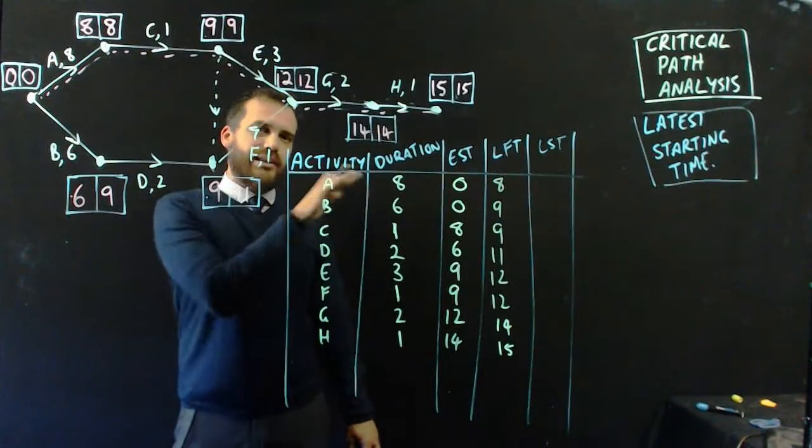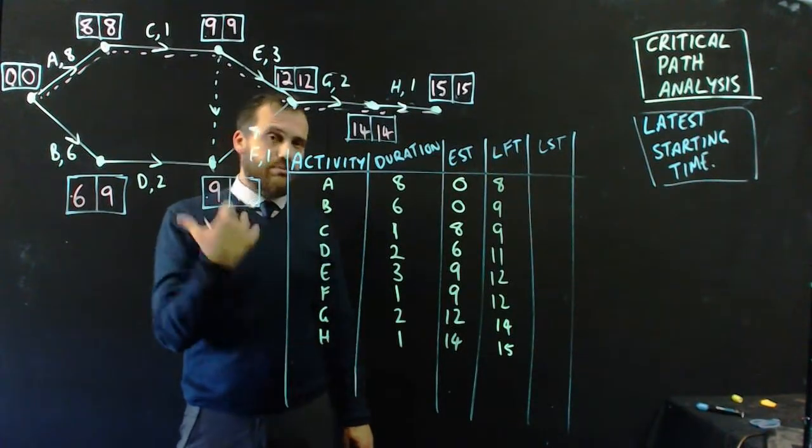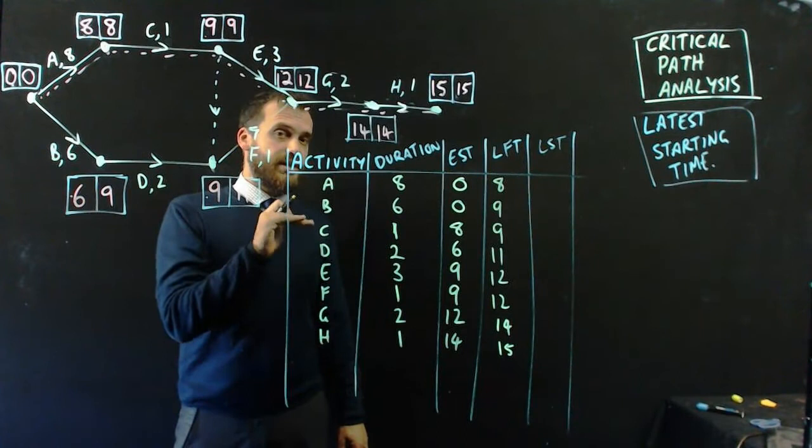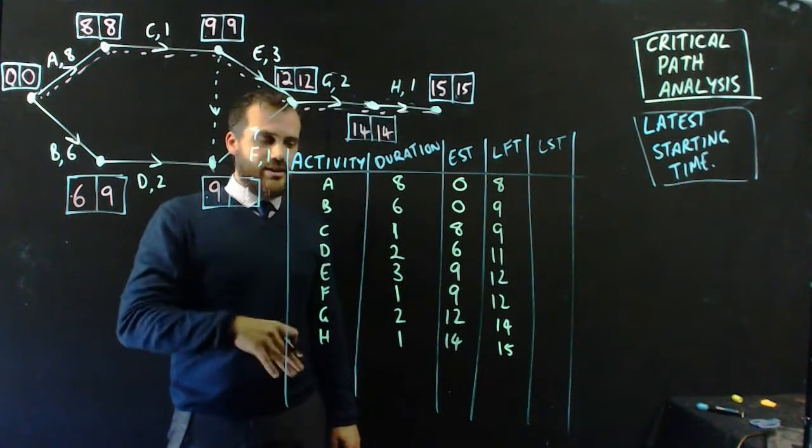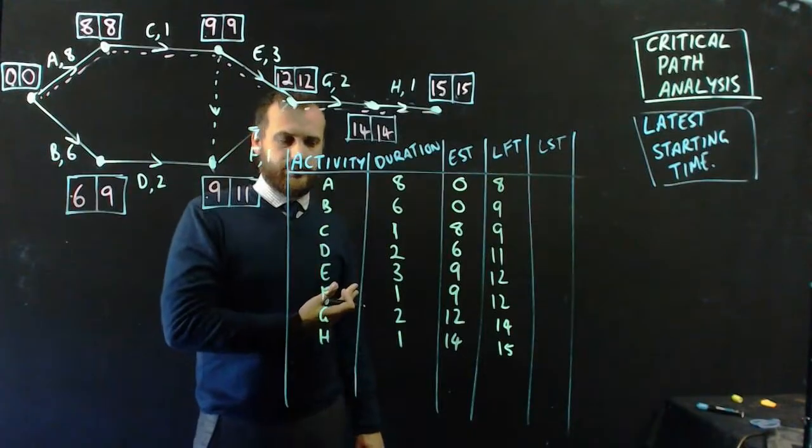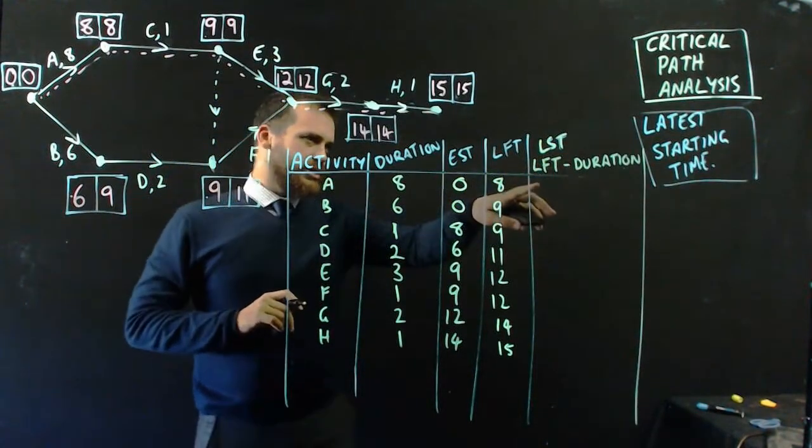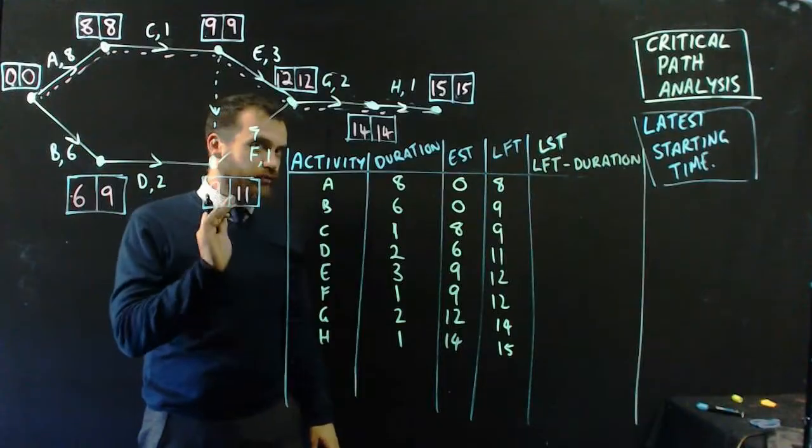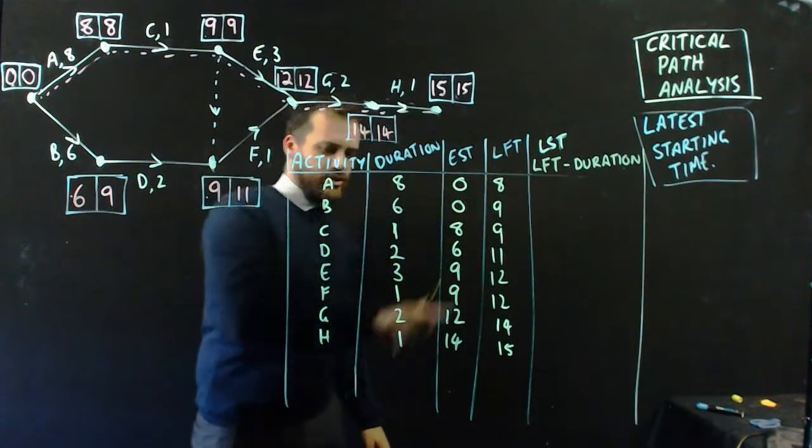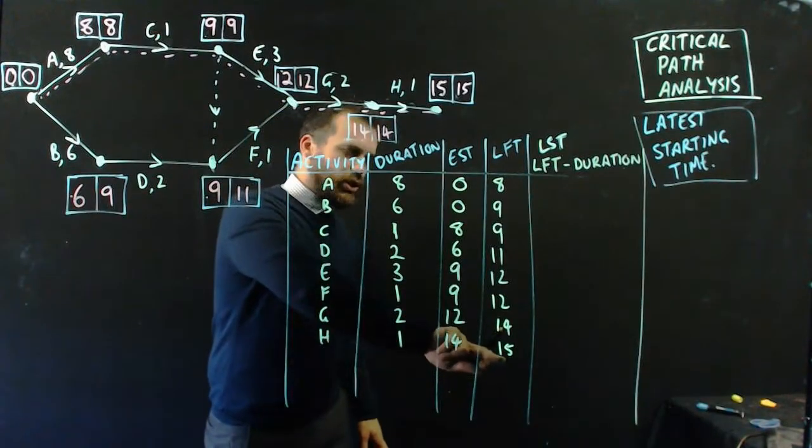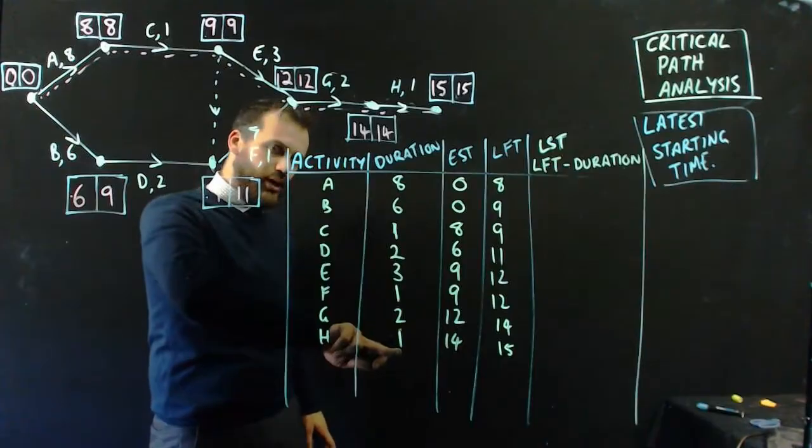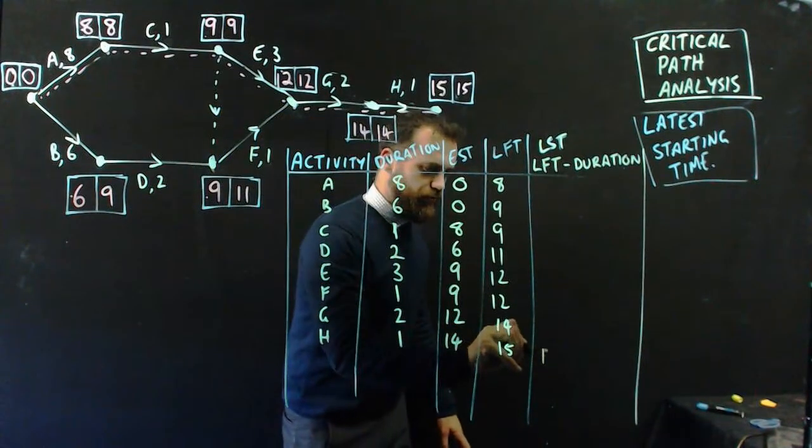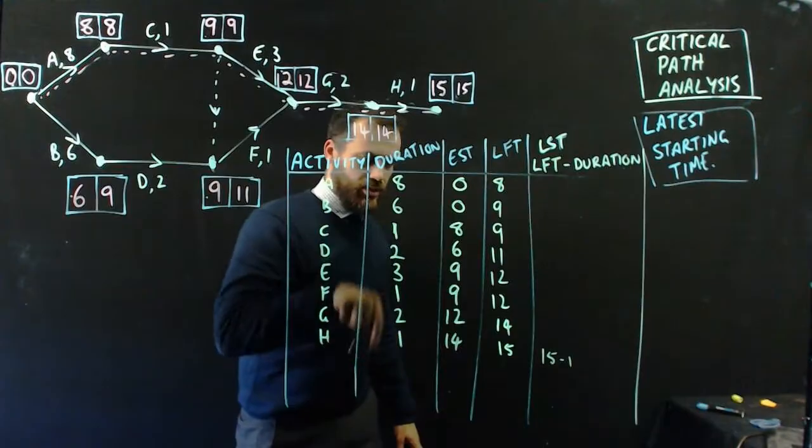And what about our last column here? Latest starting times. Latest starting times is the most important part of this whole critical path analysis, because we're saying, right, this is the latest that this job can get started. If it gets started any later than this, the job won't get done on time. Now, I've written in a little formula for you up here. The latest starting time is equal to the latest finishing time minus the duration of the activity. Now, that should make perfect sense, right? Because the latest finishing time of job H is 15. The time it takes to do H is 1 hour. So that means that the latest that H can start and have us finish on time is 15 minus 1, which is 14.